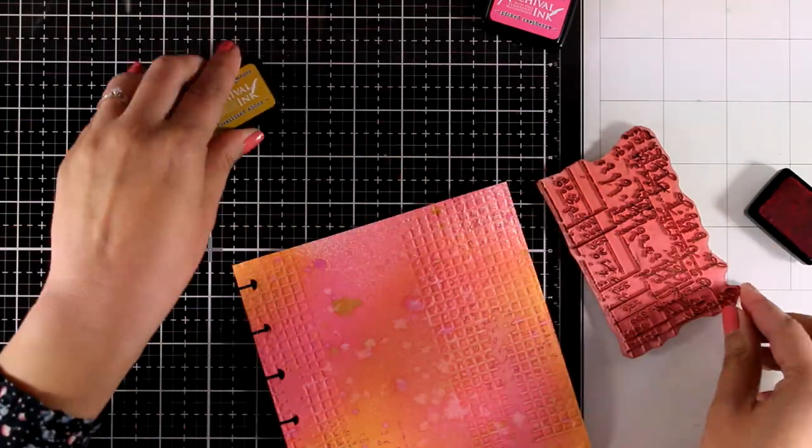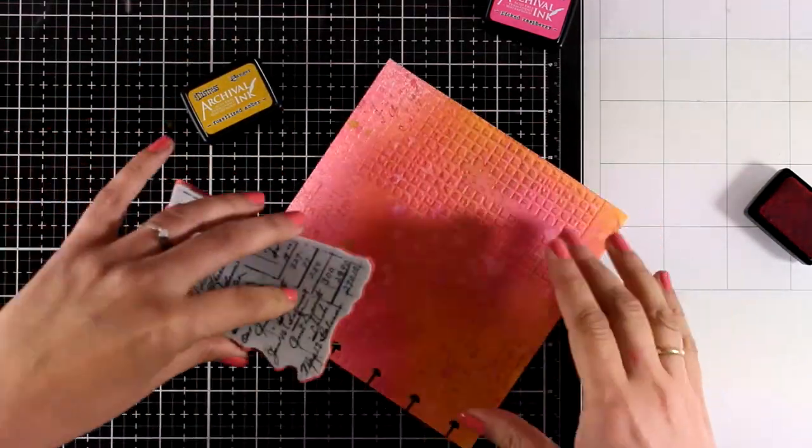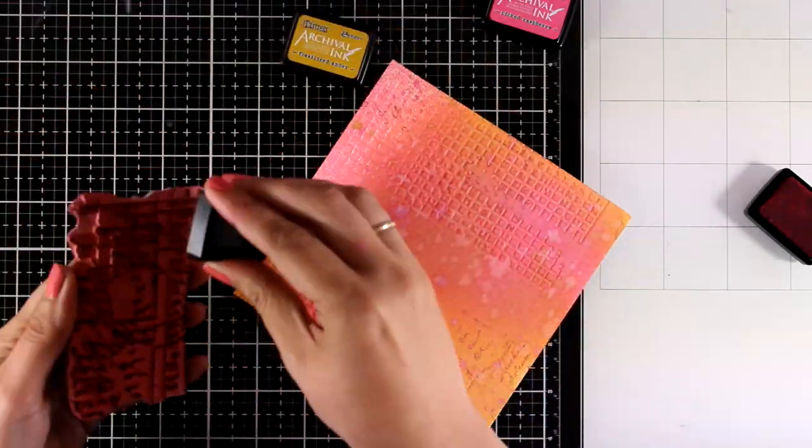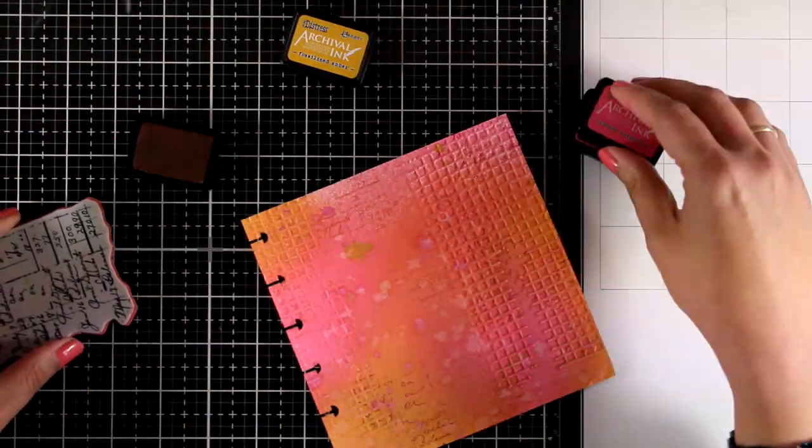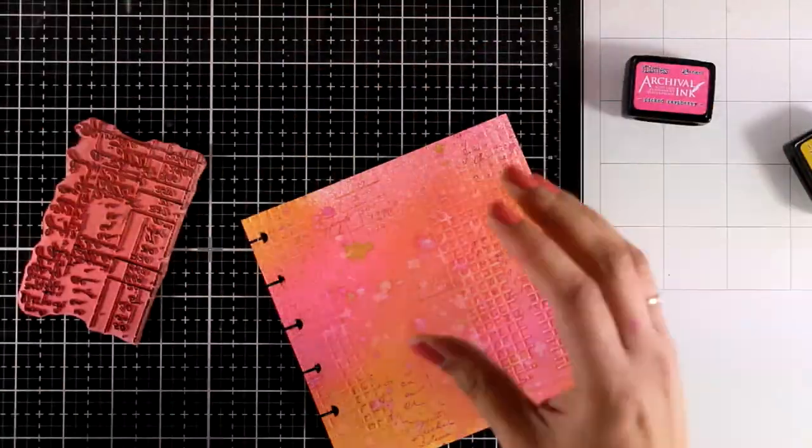I'm going to do some random stamping at the background by using a text stamp. You can use any stamp for that. I believe the one that I'm using here is from the ETC stamp set, and as always you will find everything you need linked down below.